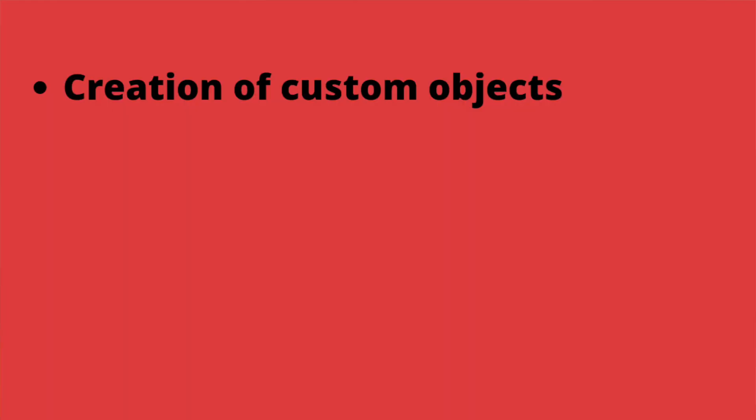The first limitation is about the creation of custom objects. You will have to limit yourself to the objects provided by HubSpot and will not have the possibility to create databases corresponding to your specific needs. You will also be limited in terms of the number of lists you can create. The creation of active lists is essential in the proper management of your database, and HubSpot Starter will limit you to 25 active lists and 1,000 static lists. Actually, 25 is really little, considering that these active lists are also used to circumvent other limitations of the starter version.